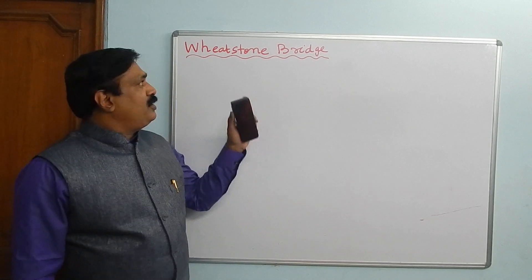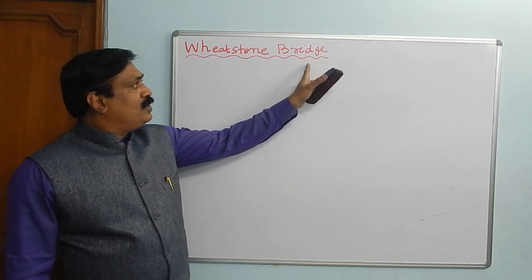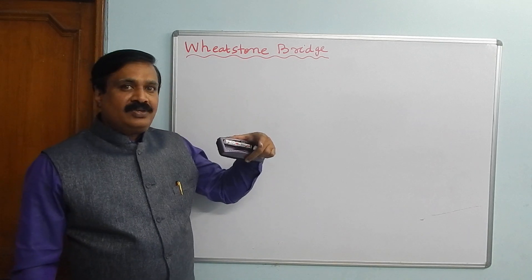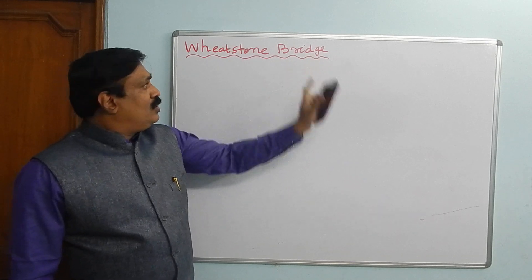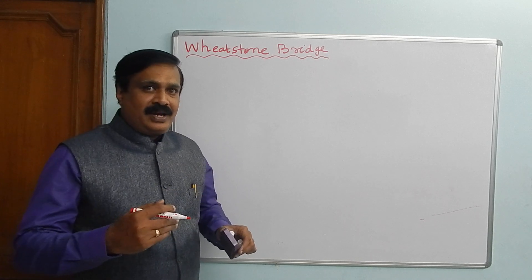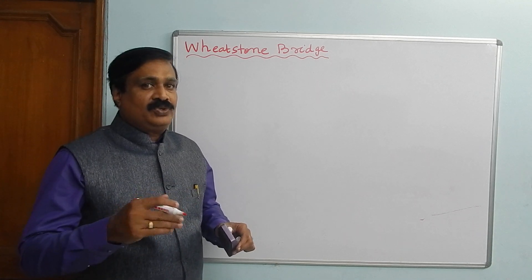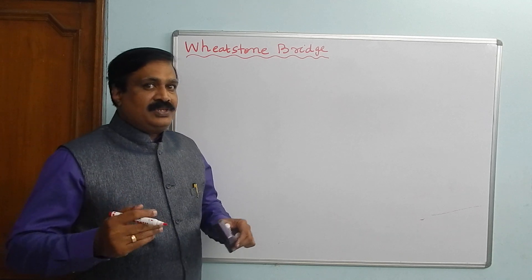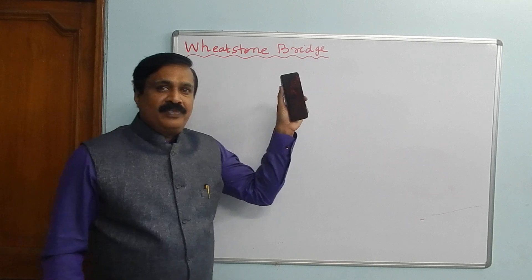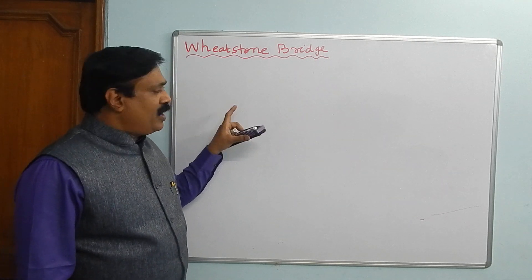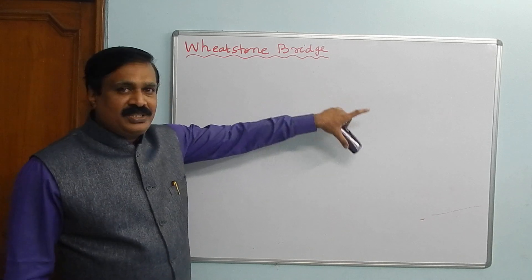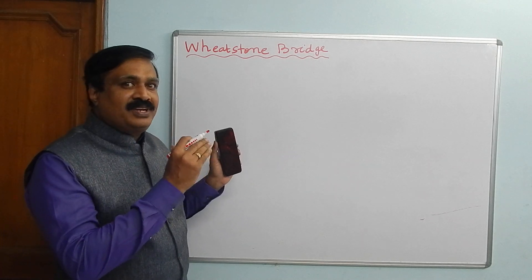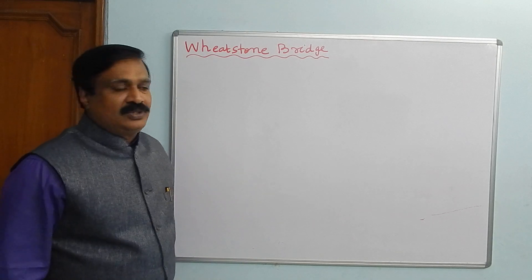Good morning. Today let us see the Wheatstone bridge from last class, using Kirchhoff's first law and second law. We are going to apply both laws in this Wheatstone bridge. This is a principle for upcoming classes — how to find resistance using a meter bridge, and how to find unknown resistance using a potentiometer. This is the basic principle. It seems to be a complicated circuit but if you closely watch, it is very simple.